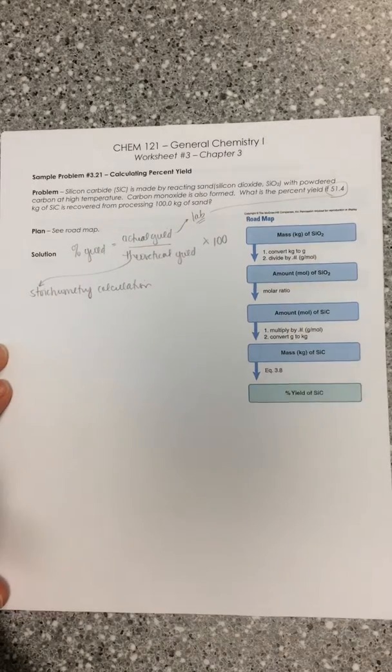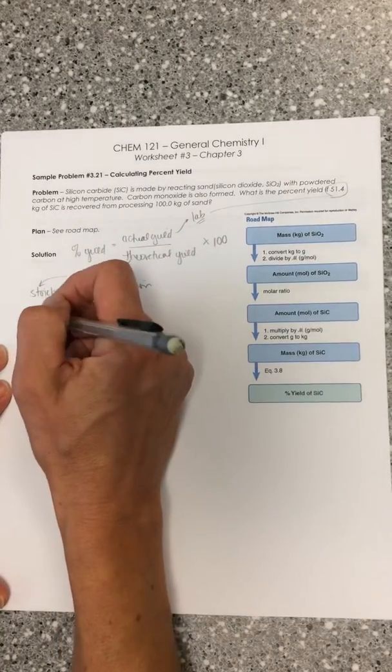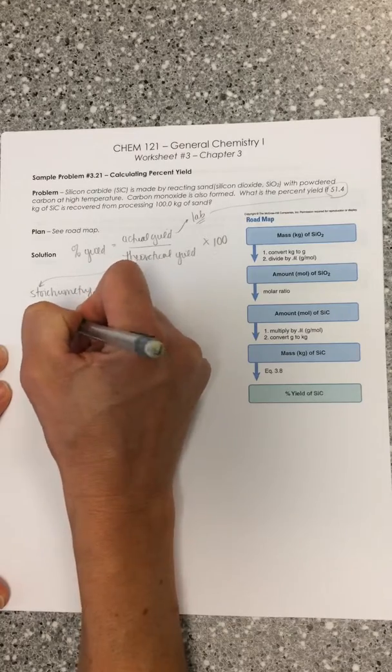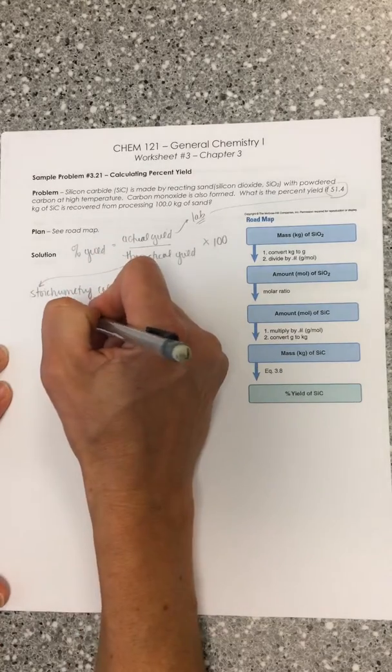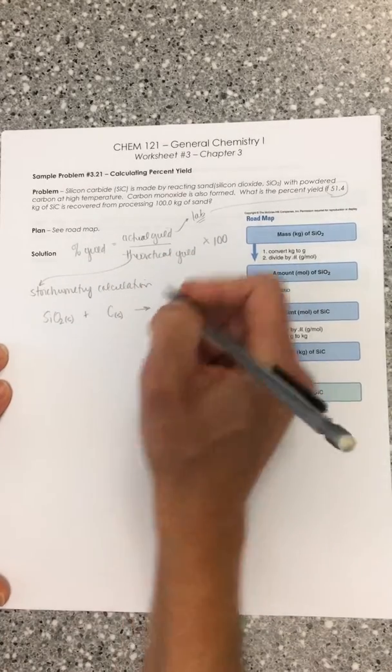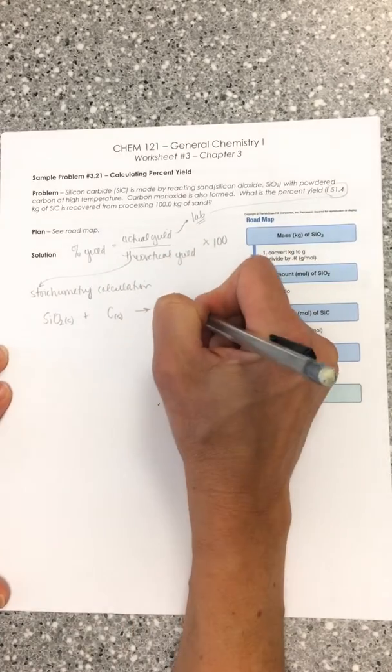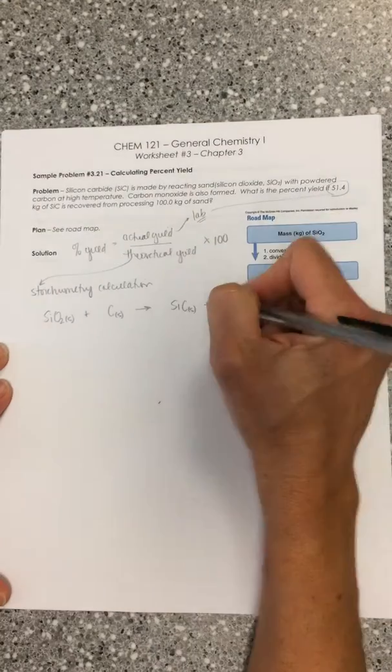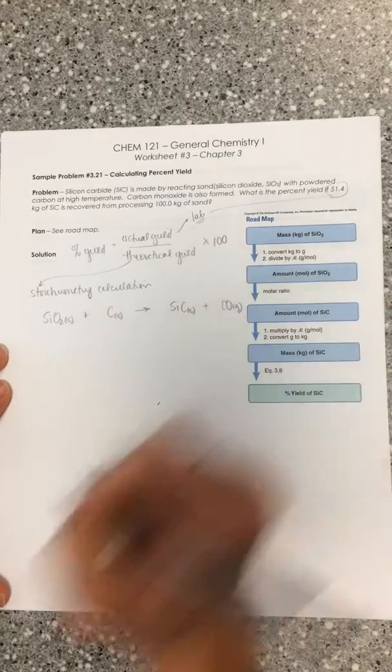So silicon carbide is made by reacting sand, which is silicon dioxide. So we've got SiO2 solid. We react it with powdered carbon. So we've got carbon as a solid. We're going to make silicon carbide, which is SiC solid, and then carbon monoxide, so carbon monoxide as a gas.